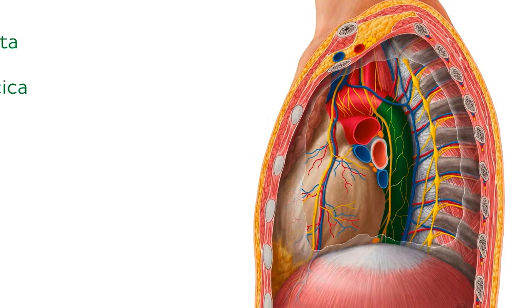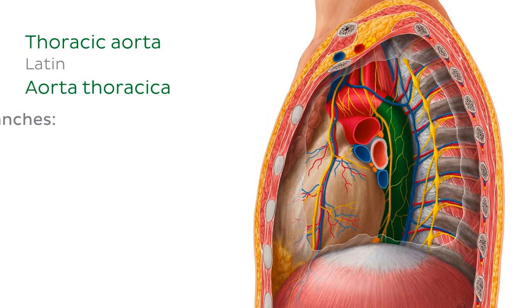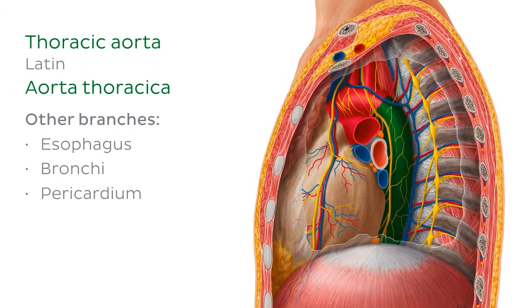Along its anterior aspect, the descending thoracic aorta gives off between two and five unpaired esophageal branches, as well as a number of bronchial and pericardial branches. It also gives off a pair of superior phrenic arteries, which supply the diaphragm.